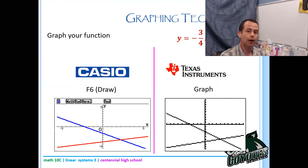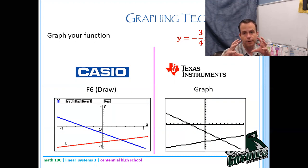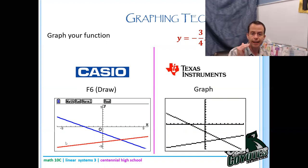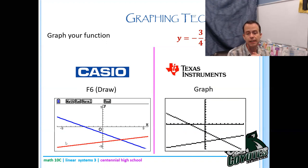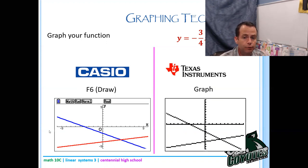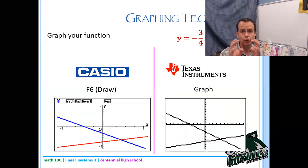You should get a picture that looks like this. If you don't, it may be that your window settings are off. Your graph is only showing you a particular spot of these lines — the lines go on forever, but your screen can't. The standard window for both Casio and TI goes from -10 to 10 on the x-scale and -10 to 10 on the y-scale.